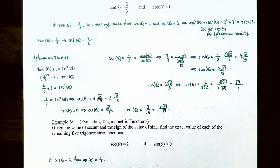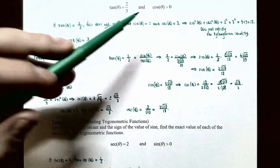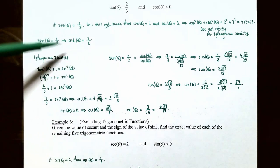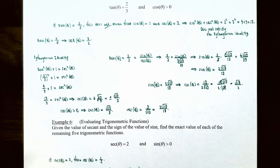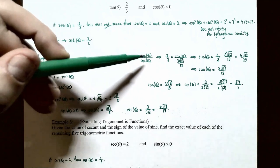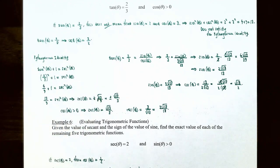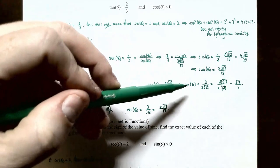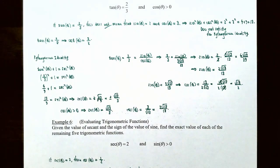To summarize example five: given tangent of theta equals two-thirds and cosine of theta positive, we found cotangent of theta equals three-halves as the reciprocal of tangent. Using the Pythagorean identity, secant of theta equals square root 13 divided by 3, and cosine of theta equals 3 square root 13 divided by 13 as its reciprocal. Using the identity tangent equals sine over cosine, sine of theta equals 2 square root 13 divided by 13. Finally, cosecant of theta equals square root 13 divided by 2 as the reciprocal of sine. So we have the values of all six trigonometric functions.